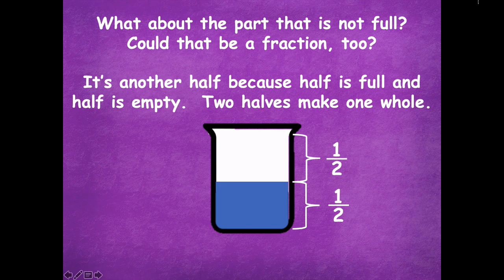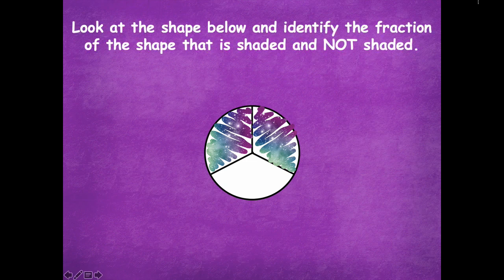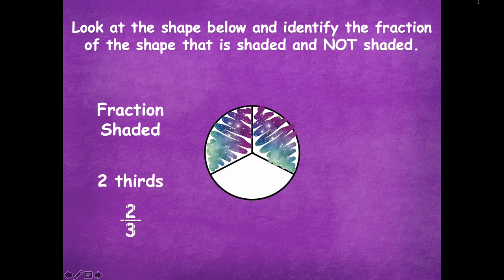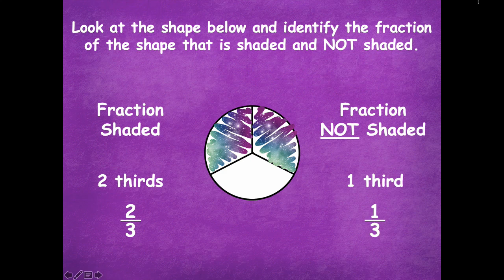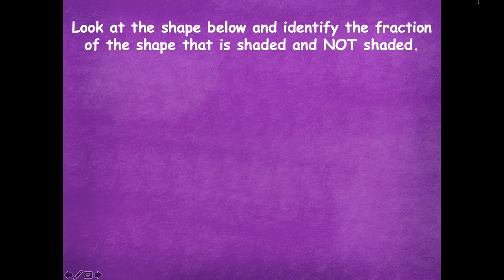Look at the shape below and identify the fraction that is shaded and not shaded. The fractional unit is thirds because it's in three equal parts, and two parts are shaded — so that's two-thirds. We could write that in unit form or in numerical fraction form. What about not shaded? Here we have one part, which is one-third. We can write that as a fraction as well.